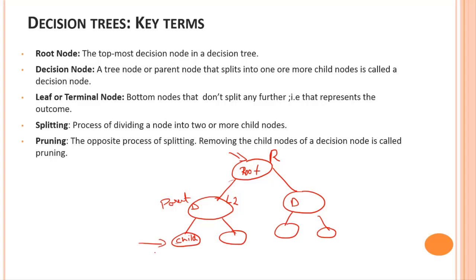Leaf nodes are the end-most nodes that represent the outcome. Splitting is the process of dividing a node into two or more child nodes — for example, node L2 is broken down into C1 and C2. Pruning is the opposite of splitting: it is the process of removing child nodes from a decision node. These are the key terms related to decision trees, and we will explore them more deeply when we get into the classification algorithm.